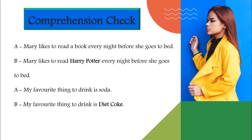See if you can tell the difference. 'Mary likes to read a book every night before she goes to bed.' Can you guess the common nouns used in the sentence? Your answer is right if you thought it's the word 'book.' Next example: 'My favorite thing to drink is soda' versus 'My favorite thing to drink is Diet Coke.' The word 'soda' is a common noun which has been replaced with the word 'Diet Coke.'